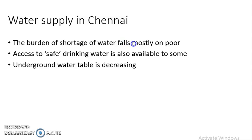The water supply in Chennai is an important case study given in your textbook. We can see that richer people, who have money, can get private water supply. But poor people cannot afford it. The burden of shortage of water falls mostly on the poor. Rich people can collect water from private facilities or private companies, but poor people cannot afford it — so the final burden of shortage falls on them.